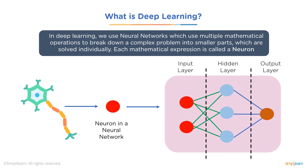A neural network contains layers of interconnected nodes. Each node in a neural network is a perceptron, similar to a multiple linear regression. The perceptron feeds the signals produced by multiple linear regressions into an activation function that may be non-linear. Hidden layers fine-tune the input weightings until the neural network's margin of error is minimal and we get the optimal output.